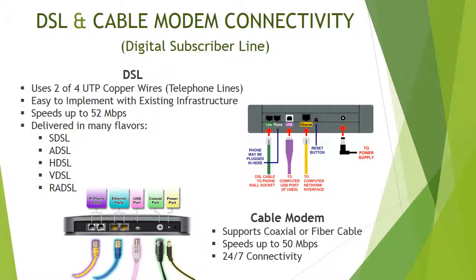After ISDN, DSL — Digital Subscriber Line — and cable modem connectivity were the next two technologies to be adopted. DSL uses only two of the four unshielded twisted pair copper wires. It was easy to implement with the existing telephone line infrastructure, and attains speeds of up to 52 megabits per second. It is delivered in many flavors, but the three most important are SDSL — Symmetric DSL — in which data both upstream and downstream travel at the same rate.